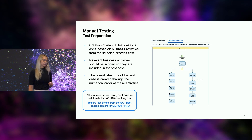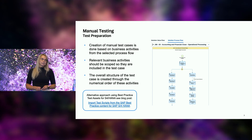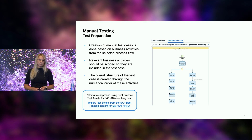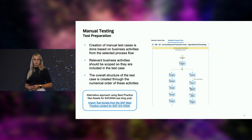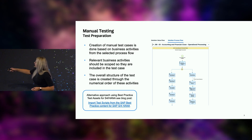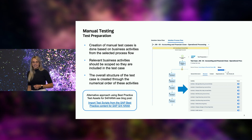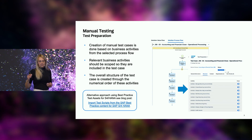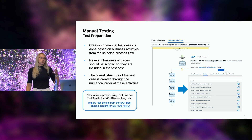One option is reusing the information we already have — and we have a lot of information already in Cloud ALM, for example in the solution process flow. The solution process flow describes a solution process flow, and you can reuse the business activities out of it to create your test cases directly. Your business activities then become test activities inside your test case, which you can further describe in more detail.